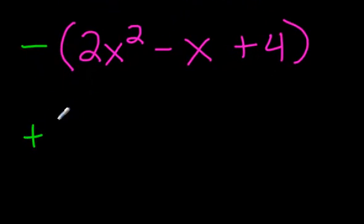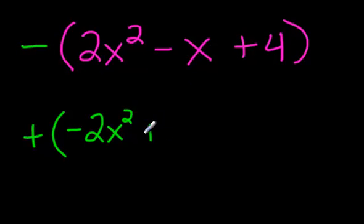So let's do that. Let's put a plus sign. We can leave the brackets if you want just for now. What is the opposite of 2x squared? Well, negative 2x squared. What's the opposite of negative x? Positive x. What's the opposite of plus 4? Minus 4. This is the opposite of this.